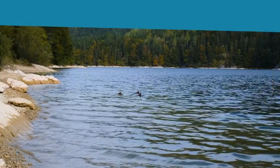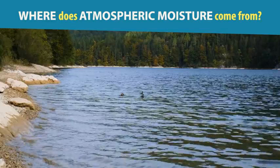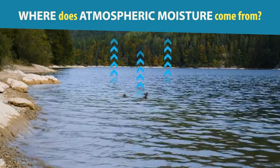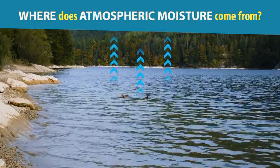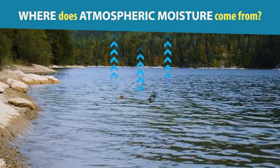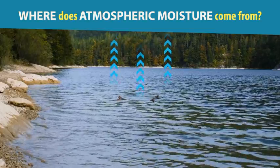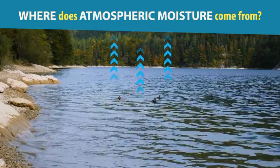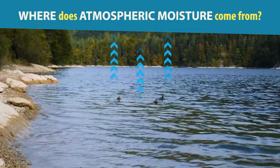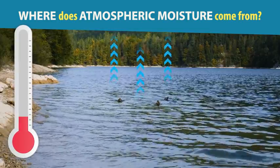First off, where does atmospheric moisture come from anyway? Well, it's not outer space, so it must be coming from the Earth's surface. To understand how moisture gets from the Earth's surface into the air, we have to first break down the concept of temperature. You'll see why in a moment.